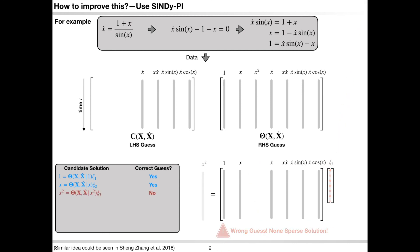The remaining procedure is basically the same: test each term individually from the left-hand side library and form a new sparse regression problem to generate candidate models.